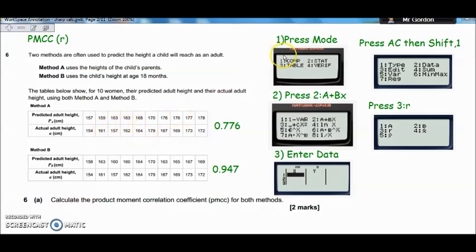On the Casio, you're going to have to press mode first, and that will bring you to this screen or something similar. And you want the stats option. On my model, it's number 2. So I've pressed 2, and I've got this screen in front of me now. And I want the a plus bx, very similar to linear regression. So I want option 2 here.